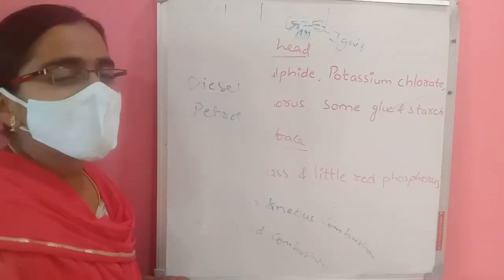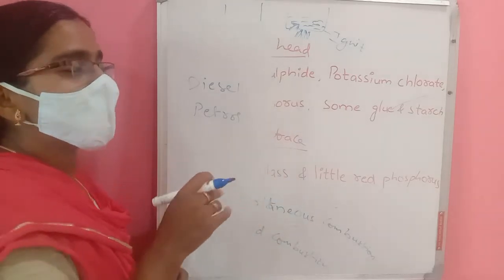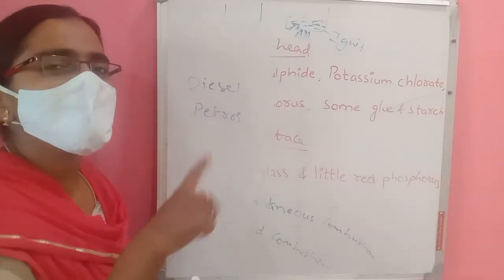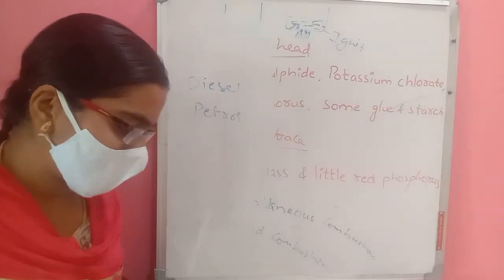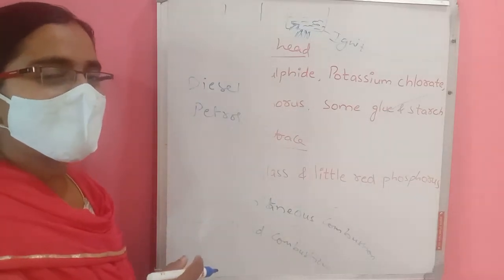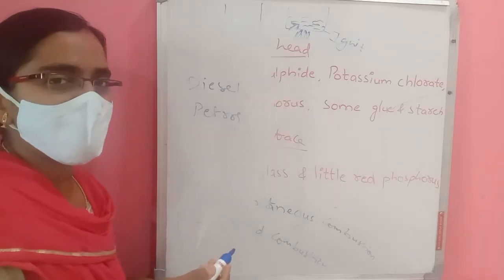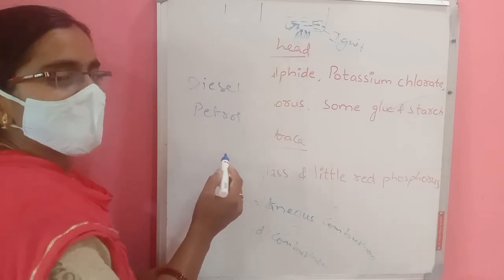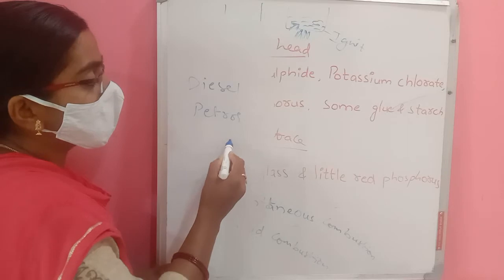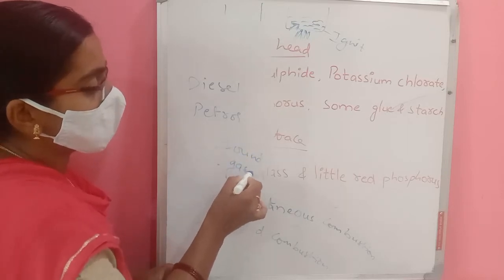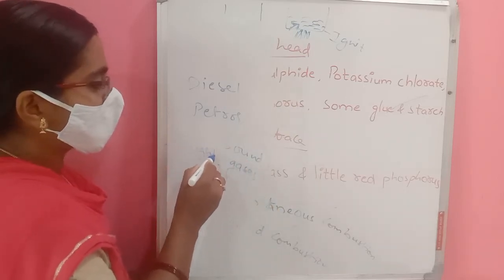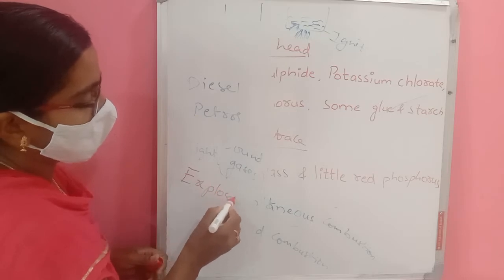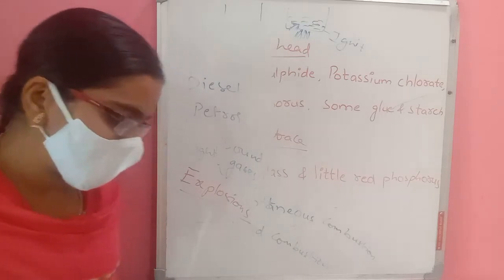Petrol and diesel tankers carry a warning label 'highly inflammable,' meaning these materials can catch fire very easily — so be careful. In Diwali, crackers like hydrogen bombs and lakshmi bombs are examples where giving a small amount of heat causes a sudden release of energy, a full sound, and different gases — this type of combustion is called an explosion.